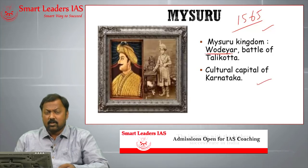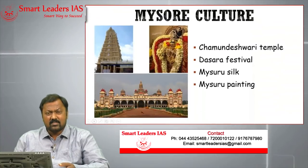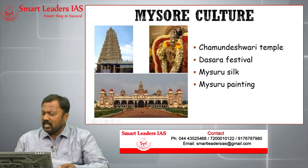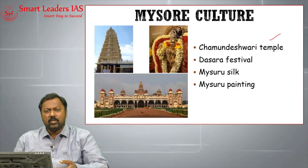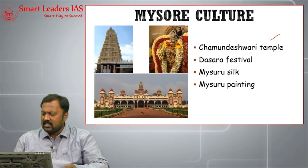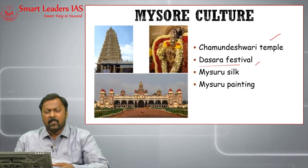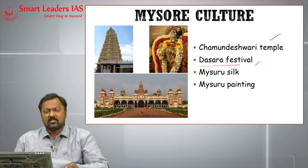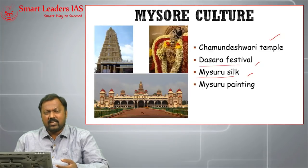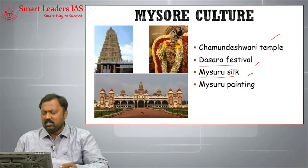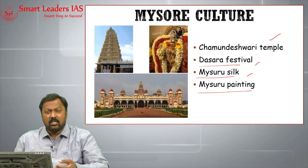Mysore is referred to as the cultural capital of Karnataka. It has an important temple called Chamundeshwari Temple, closely associated with the Udayar ruling dynasty. Mysore is known for the Dasara festival, which is widely popular in Karnataka and attracts many tourists and foreigners. Mysore is also known for Mysore silk — a very important variety known throughout the world — and for Mysore paintings.